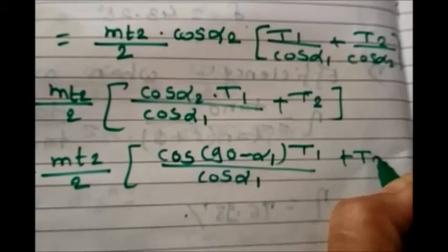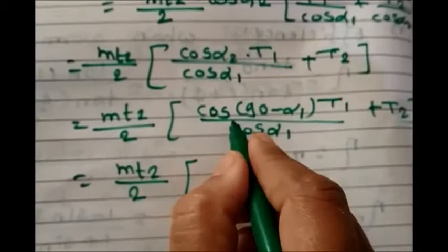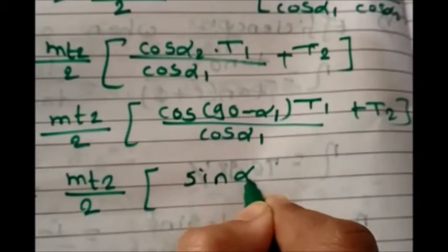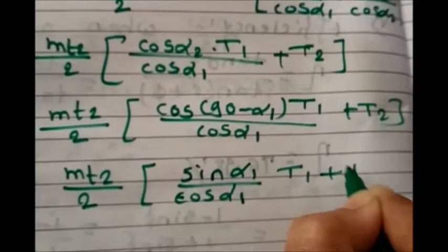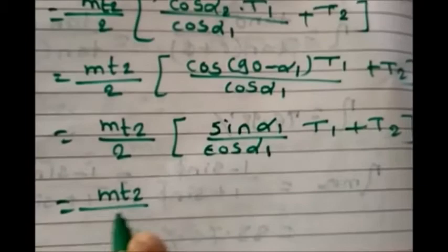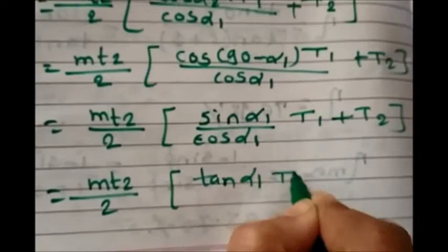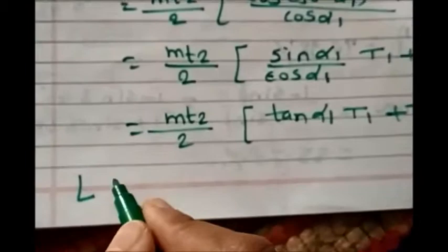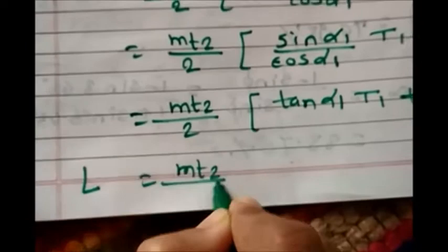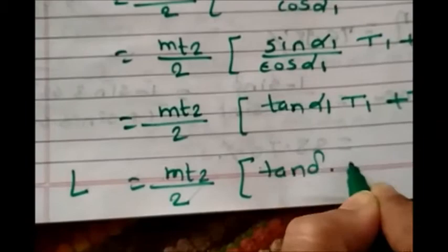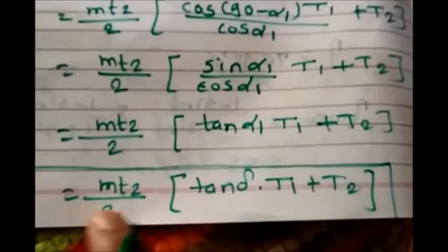Applying the identity cos(90° − α1) = sin α1: the bracket becomes sin α1·t1/cos α1 + t2. Since sin/cos = tan, this simplifies to tan α1·t1 + t2. Therefore, the final equation for center distance in the case of worm and worm gear is: L = (mt2/2) · [tan α1·t1 + t2].